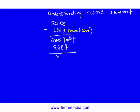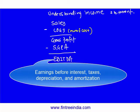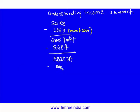When you say gross profit minus SG&A, what you get is EBITDA. EBITDA full form is earnings before interest, tax, depreciation and amortization. Then you would say minus depreciation and amortization.